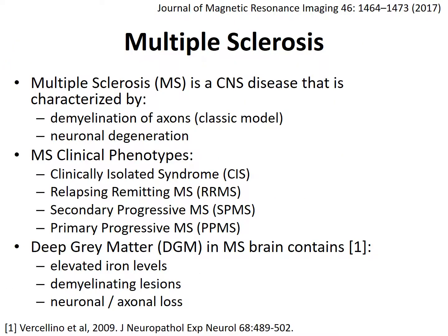Multiple Sclerosis is a central nervous system disease characterized by demyelination of axons, which is the classical model, and also neurodegeneration. There are four clinical phenotypes of MS: clinically isolated syndrome or CIS, relapsing remitting MS or RRMS, secondary progressive MS or SPMS, and primary progressive MS or PPMS. Deep brain matter in the MS brain contains elevated iron levels, demyelinating lesions, and neuronal and axonal loss.